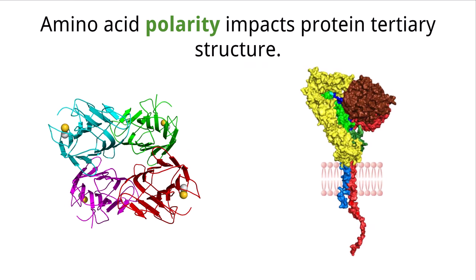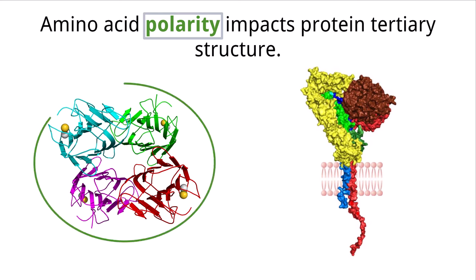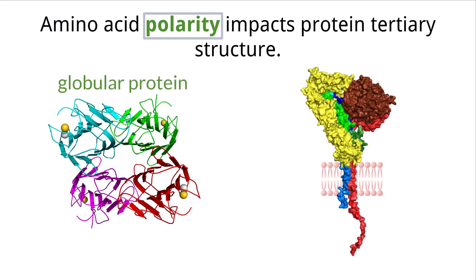We talked earlier about how amino acids can be polar and nonpolar based on their variable group. This polarity property directly impacts the tertiary structure of proteins, and you need to know about two examples of how this can occur. Some proteins take on tertiary shapes that look like a sphere, or are all globbed up together, which we call globular proteins. These proteins take on this shape because of the dichotomy between polar and nonpolar amino acids.